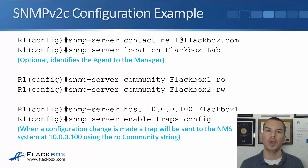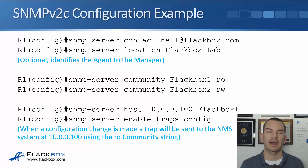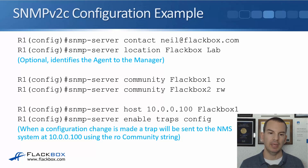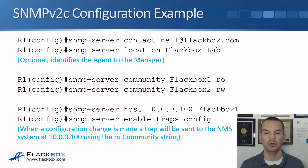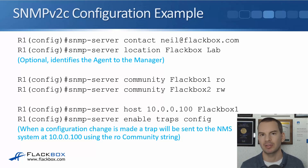Next, configure the SNMP server location with 'snmp-server host 10.0.0.100', using the read-only community string 'flackbox1' for sending traps. Then add 'snmp-server enable traps config' to push trap notifications to the server. Without the enable traps command, the server can still query the router to pull information, but configuring traps means the device also pushes notifications — for example, whenever anyone enters global configuration mode via the 'config t' command, it sends a notification to the server. There are many types of traps available, such as OSPF state changes or interface state changes.